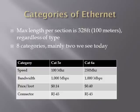There are many categories of Ethernet, but the two most popular today are CAT 5E and CAT 6A. CAT 5E offers speeds of 100 MHz, bandwidth up to 1000 MB per second, and costs about 14 cents per foot. CAT 6A offers speeds up to 250 MHz, bandwidth up to 1000 MB per second, and costs about 40 cents per foot. Both use the RJ45 connector.